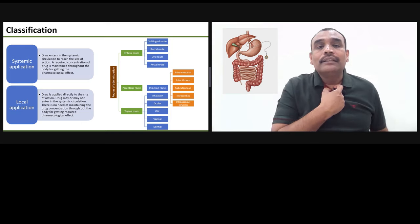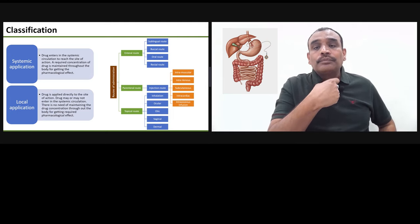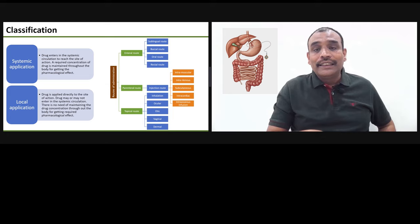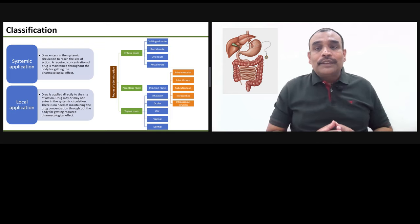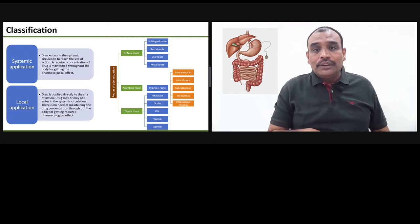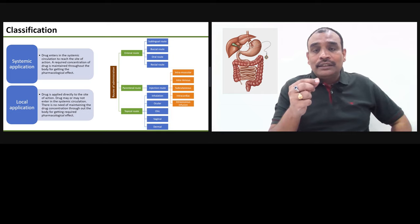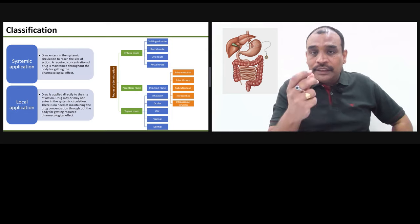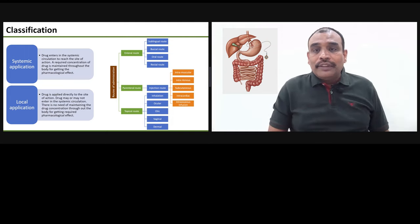The third is the oral route, which means ingesting. The tablet is taken with the help of water, crosses the oesophagus, and goes into the stomach where it disintegrates and gets absorbed. The disadvantage of this route is that many drugs do not sustain the acidic environment. Non-steroidal anti-inflammatory drugs like aspirin and diclofenac cause gastric irritation because the drug is acidic in nature and gets precipitated. Certain drugs like omeprazole can also get destroyed in this environment.